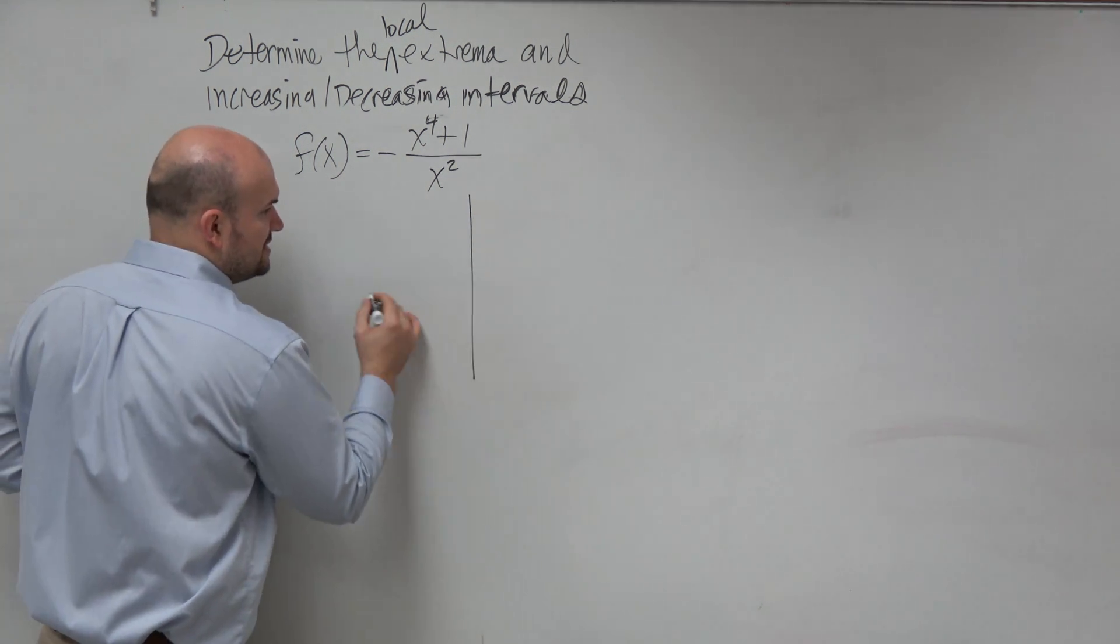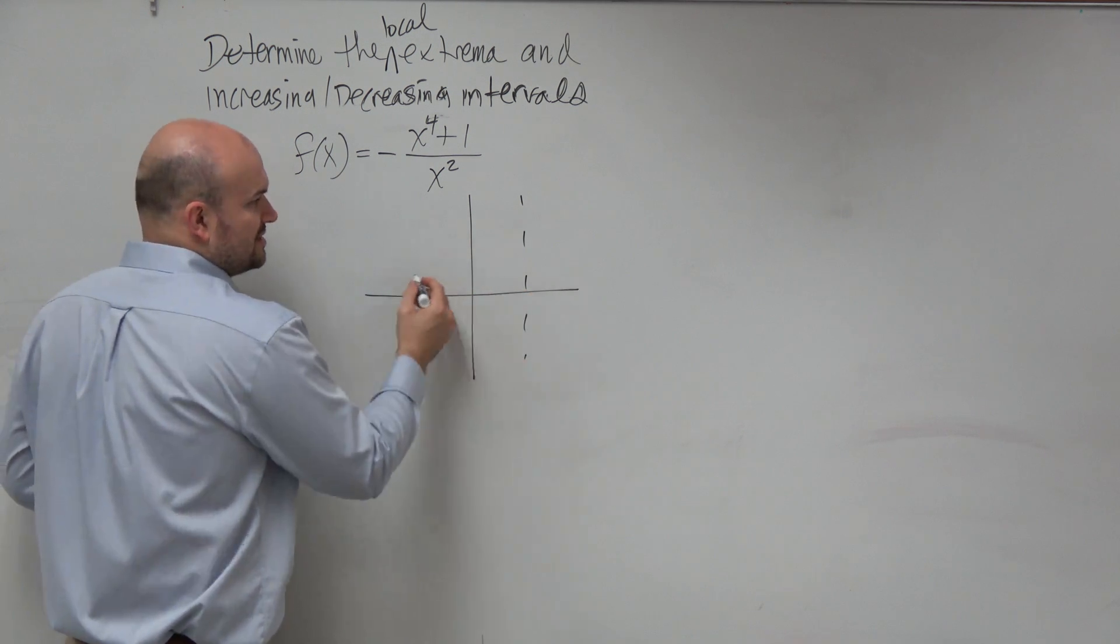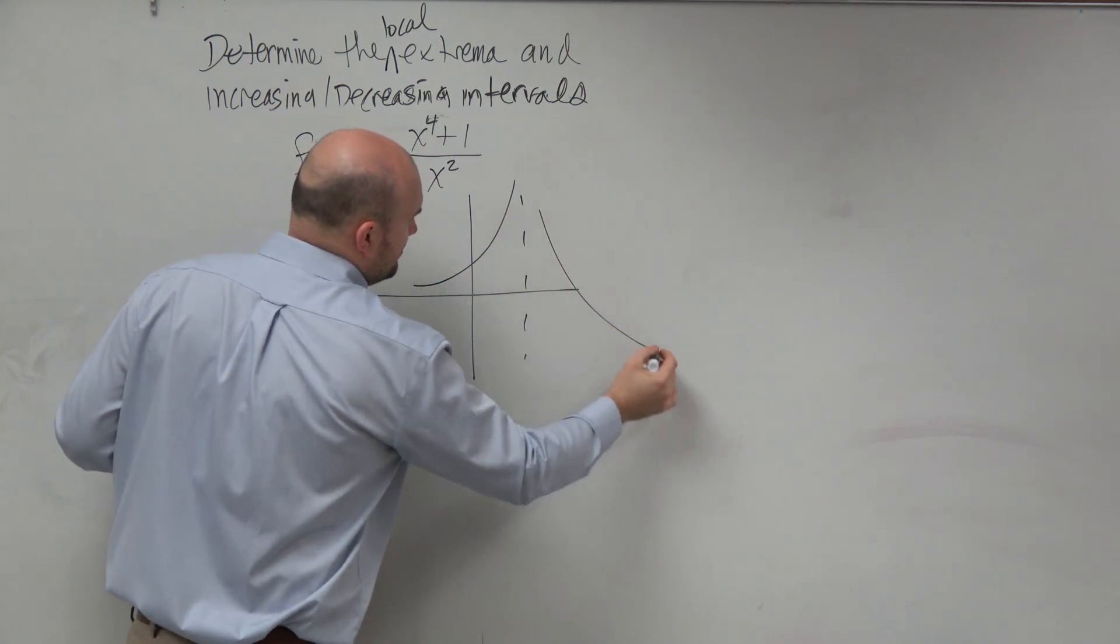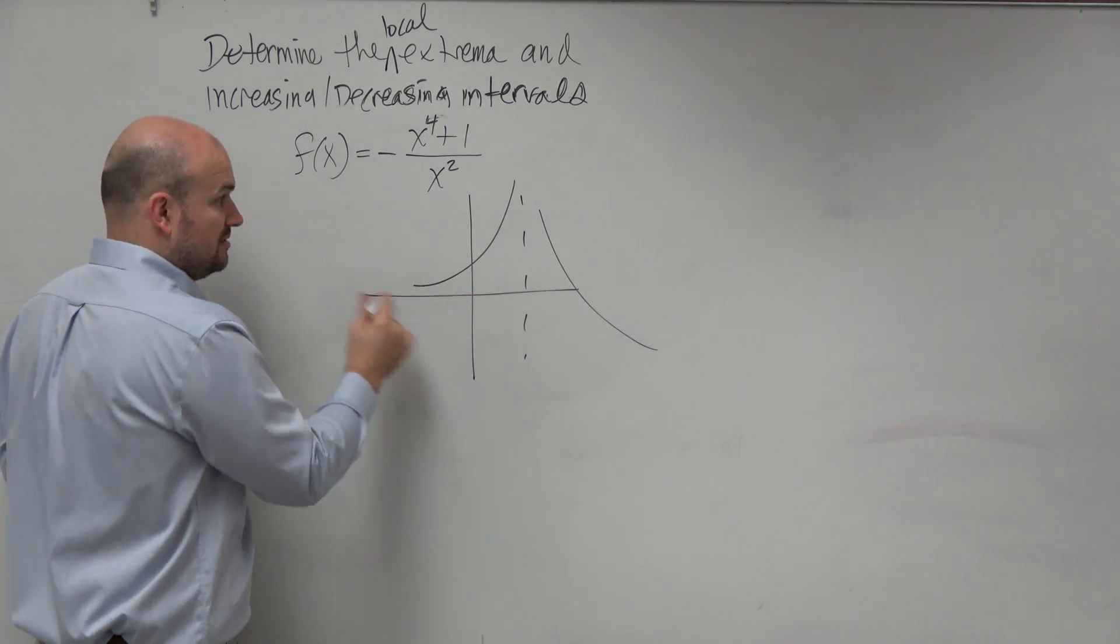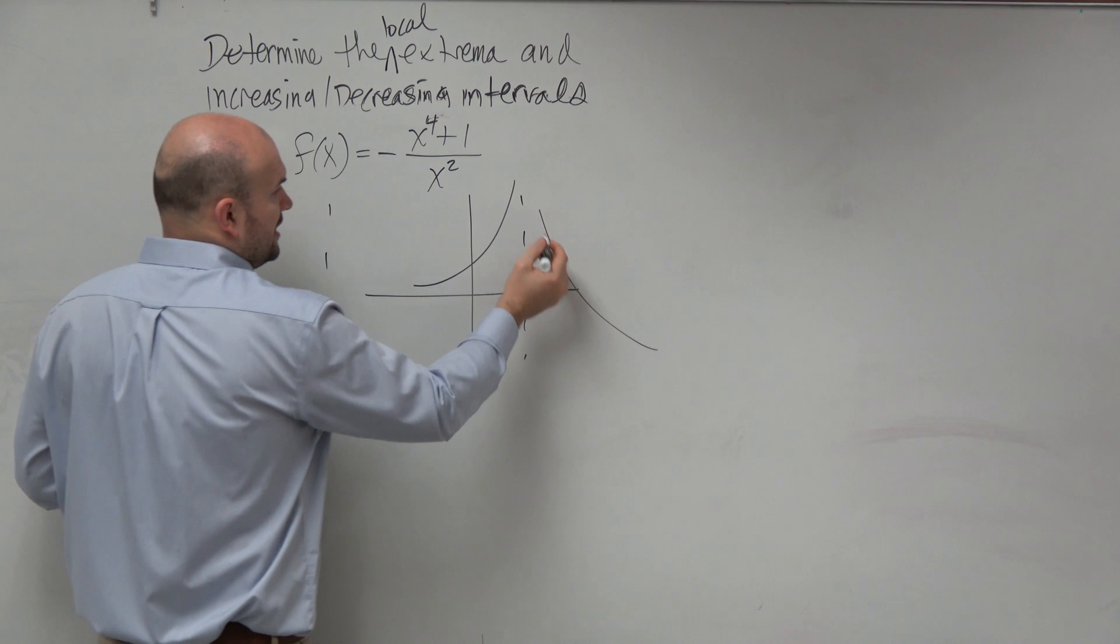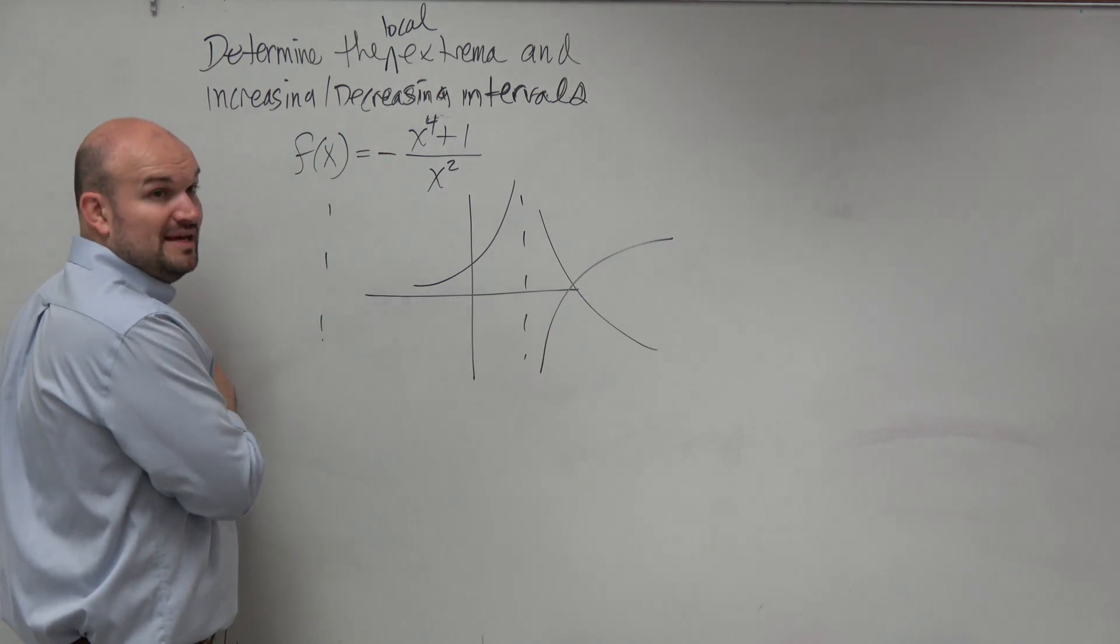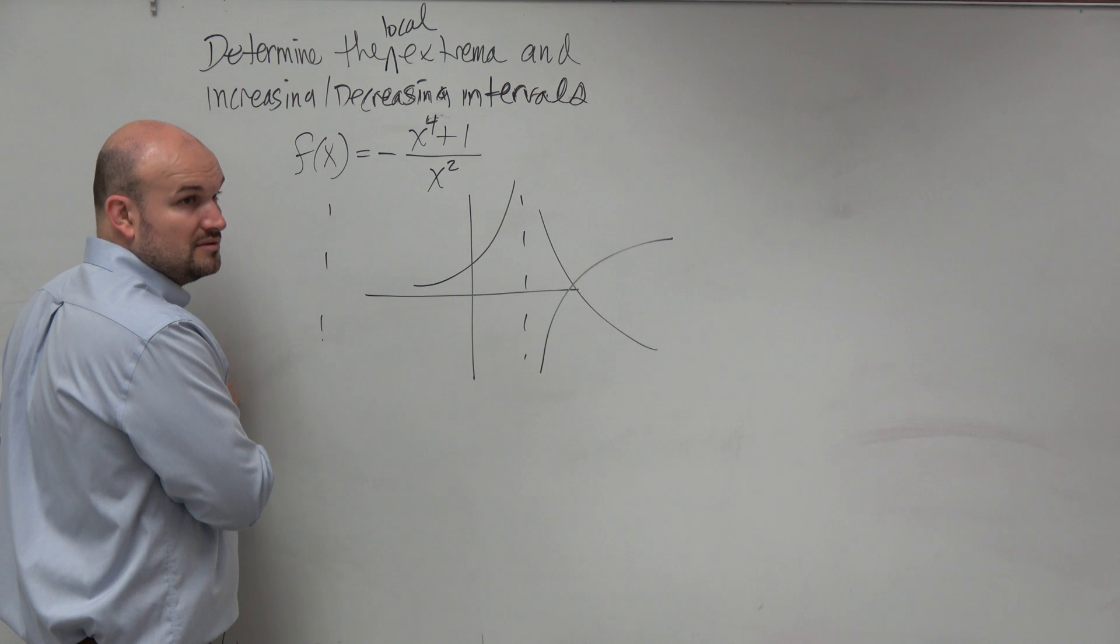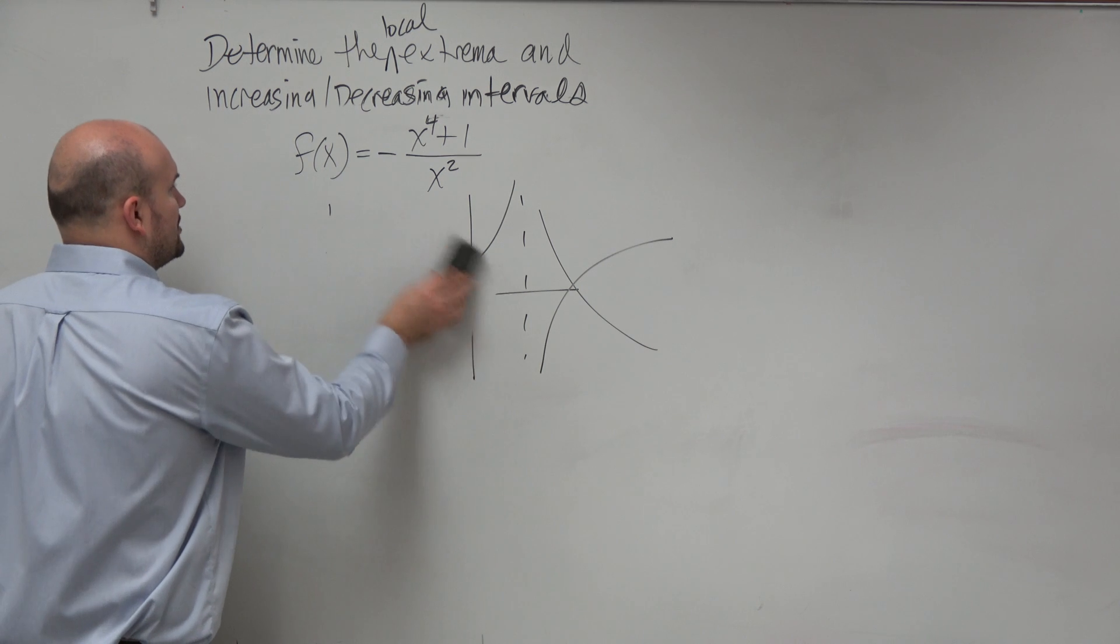But could we also have increasing, decreasing, like changing values? Here's our asymptote. Couldn't the graph be changing from increasing to decreasing, though? So it is possible. Asymptotes, it also could be increasing on both intervals. So we just got to be kind of a little bit aware of what's happening now that we have an asymptote.